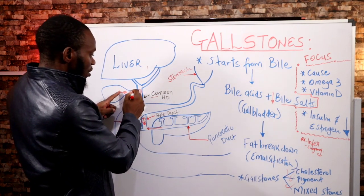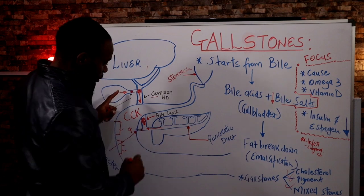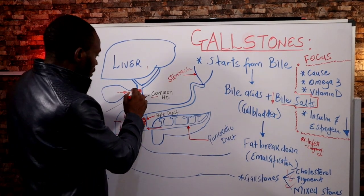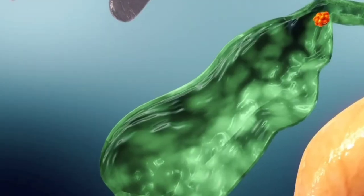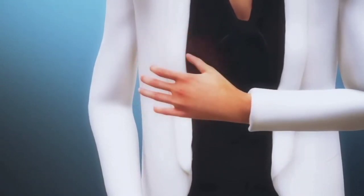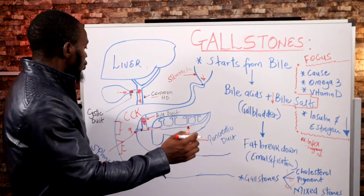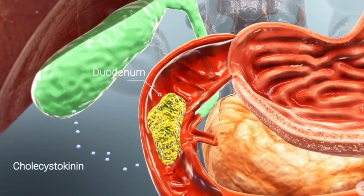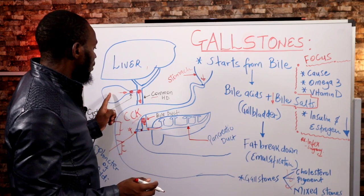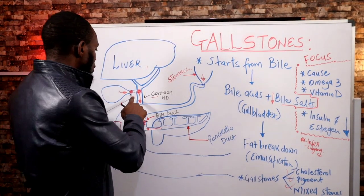There are three ducts involved: the cystic duct, the common hepatic duct, the bile duct, and the pancreatic duct. These occlusions bring different conditions. If you block the cystic duct that brings components from the gallbladder, you'll experience severe pain in your right upper quadrant when you eat a fatty meal. You produce CCK, which causes gallbladder contraction, but since the duct is occluded, bile components cannot flow into the common duct.